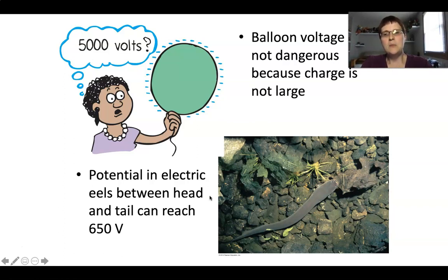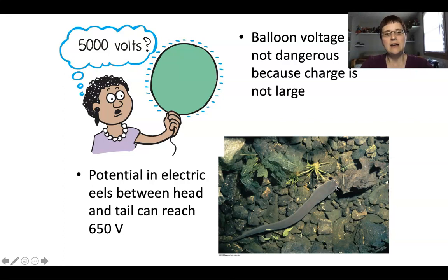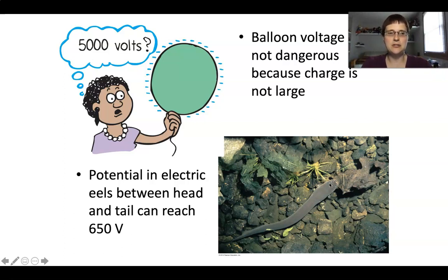On the other hand, the potential difference on an electric eel can be damaging, because it has enough electrons to build up the coulombs it needs. It can get a potential difference between its head and its tail of about 650 volts, and it has the coulombs to go with it — so it can produce a shock, which it uses to defend and hunt. It can hurt a human, though it hasn't been shown to kill one, because a lot of the charge is dissipated by the water.